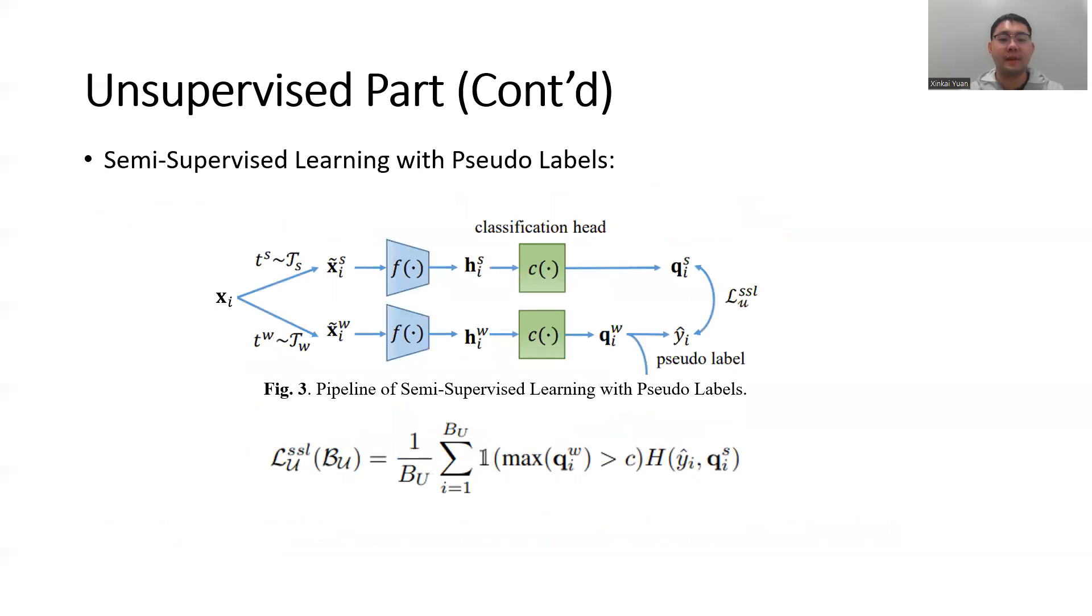For the semi-supervised learning part for unlabeled data, each image xi is augmented by a strong and a weak augmentation, respectively. For example, a weak augmentation may be a horizontal flip, and a strong augmentation can be some cutouts and color distortions.